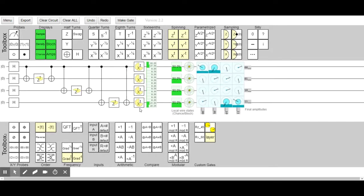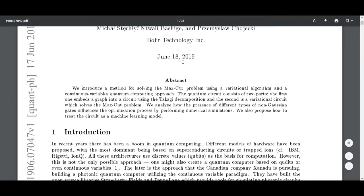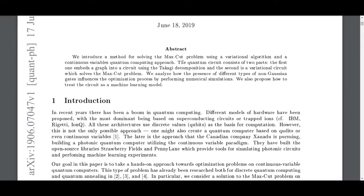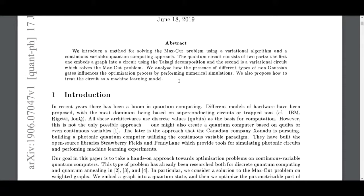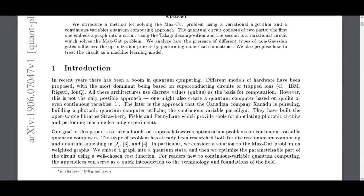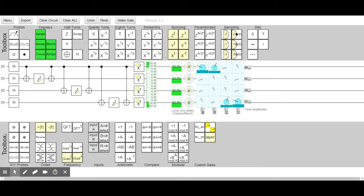Okay, it must stay like that. Let's try to scratch the surface here. When choosing the method's algorithm, it consists of two parts. The first one embeds a graph into a circuit using the Takagi decomposition, and the second is a variational circuit which solves the max cut problem. So the first part basically encodes the graph. It's a bit different in this sense - they do the graph encoding directly, whereas here you do it by building it like that.